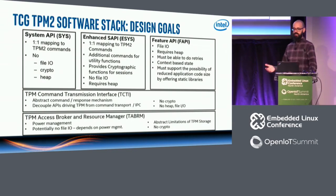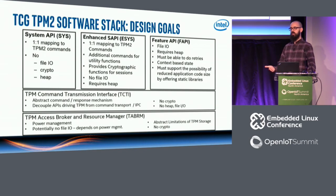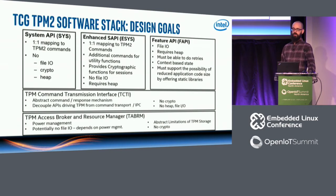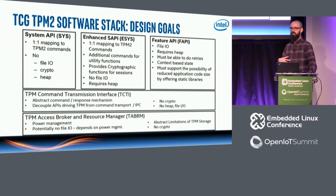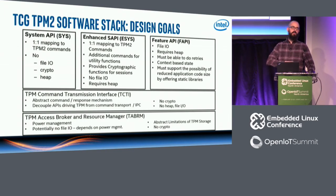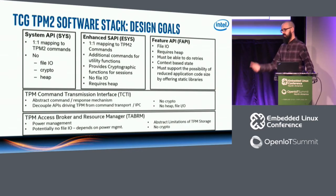The Enhanced System API is currently being finalized in the TCG spec. It brings things up a level by providing crypto functions for you, handling all HMAC sessions and encrypted sessions. It doesn't do file I/O, but it will do memory allocation for you, so it won't be usable in heavily embedded systems without a heap. The Feature API is still a bit nebulous — it's meant to be very much abstracted from the TPM itself, something that can be used by typical application developers who don't want to learn the intricacies of the TPM but know they need crypto keys and a few crypto operations without having to know the TPM commands themselves.